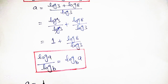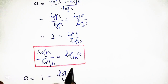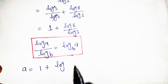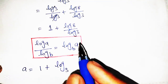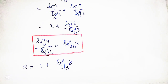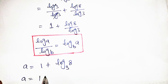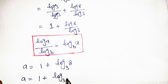Applying this formula, the equation becomes a is equal to 1 plus log base 3 of 8. We can write this in a simpler way: a is equal to 1 plus log base 3 of 8, where 8 can be written as 2 raised to the power 3.